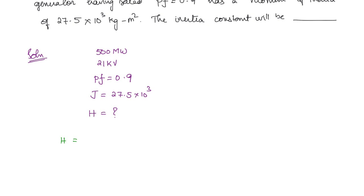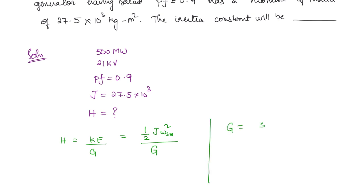H is equal to the kinetic energy divided by the machine rating in MVA. The kinetic energy is ½ J ω_SM² — that is synchronous speed in mechanical radians per second — divided by G. G is the megawatt power divided by the power factor, which gives 555.55 MVA.